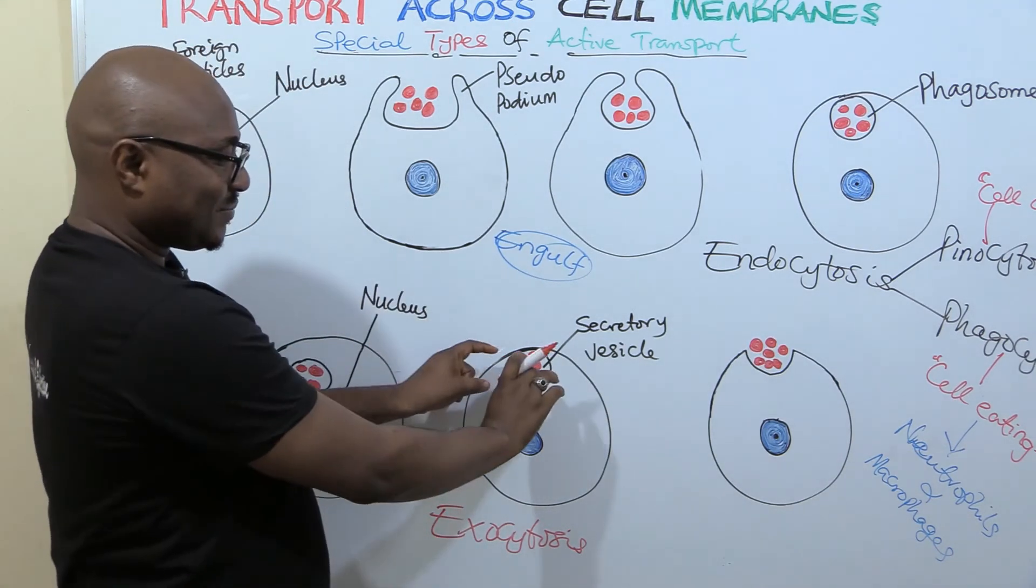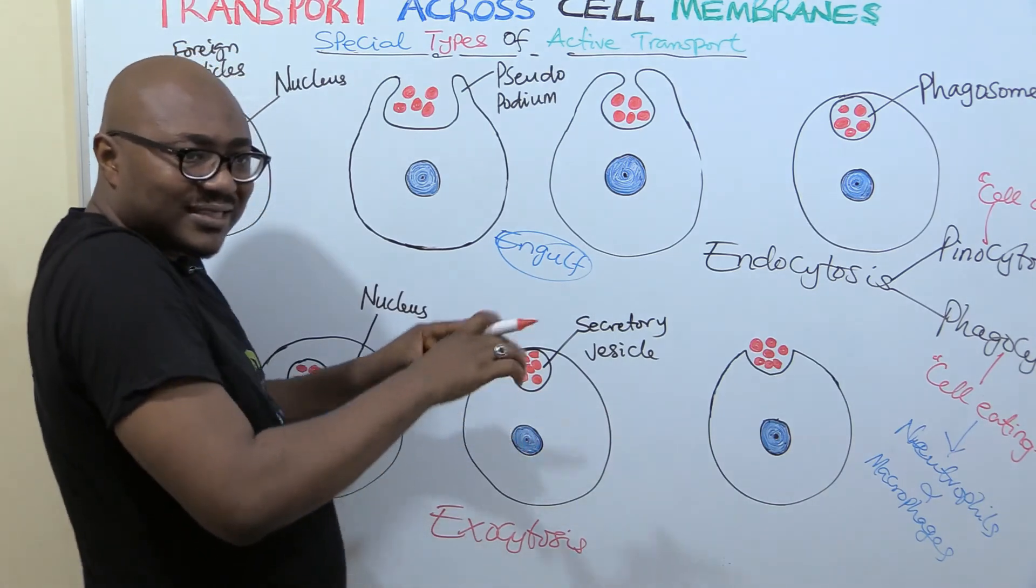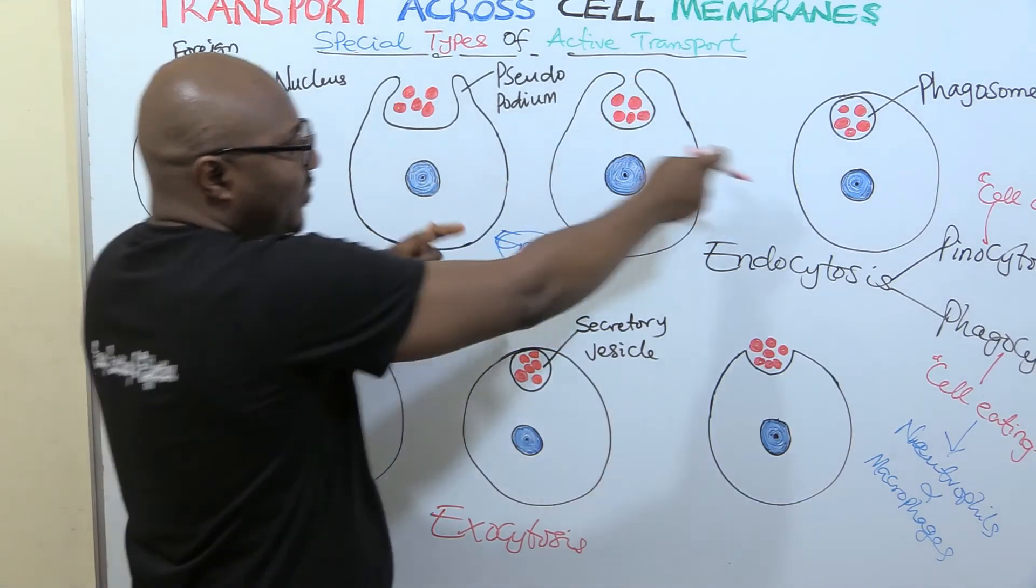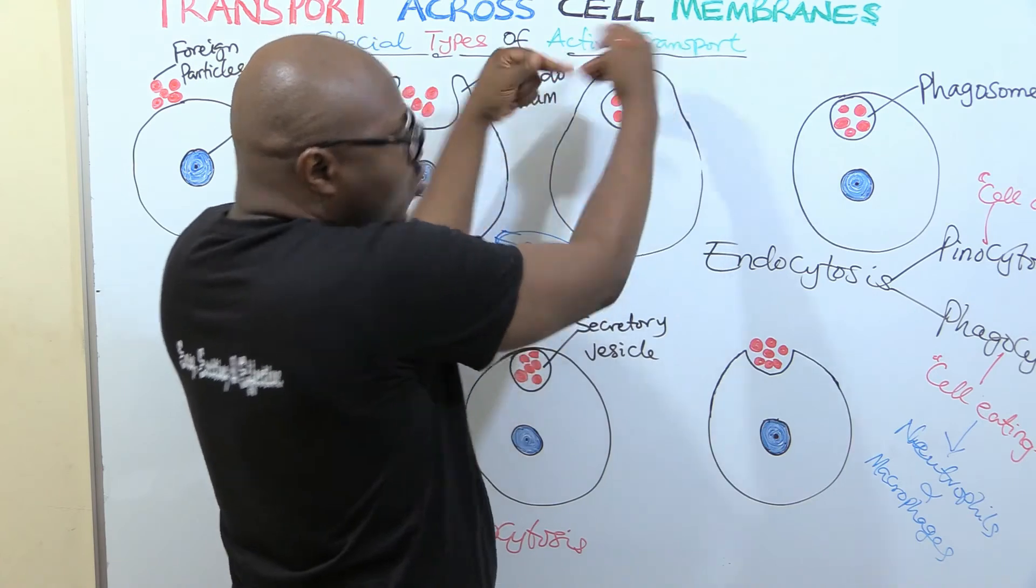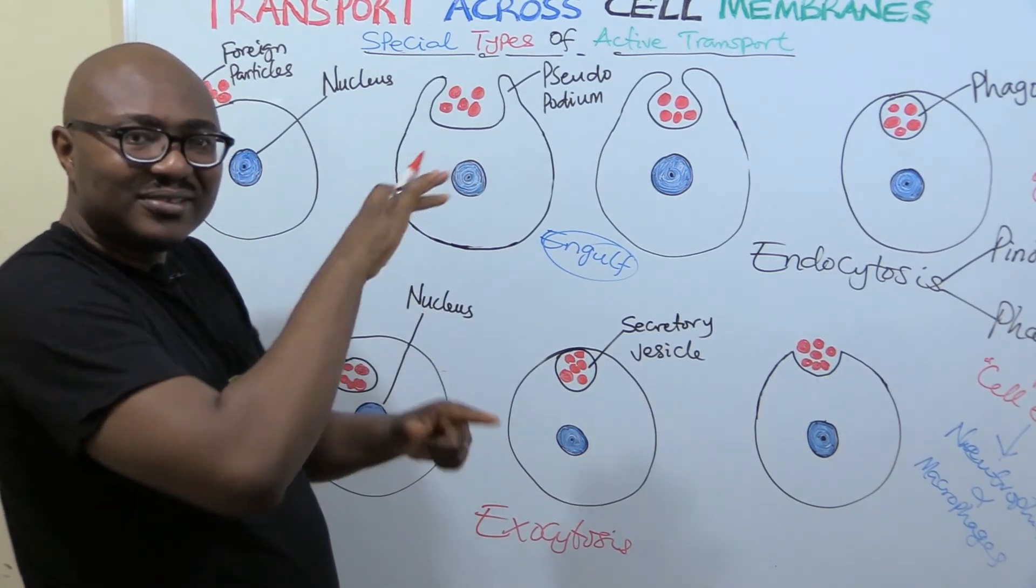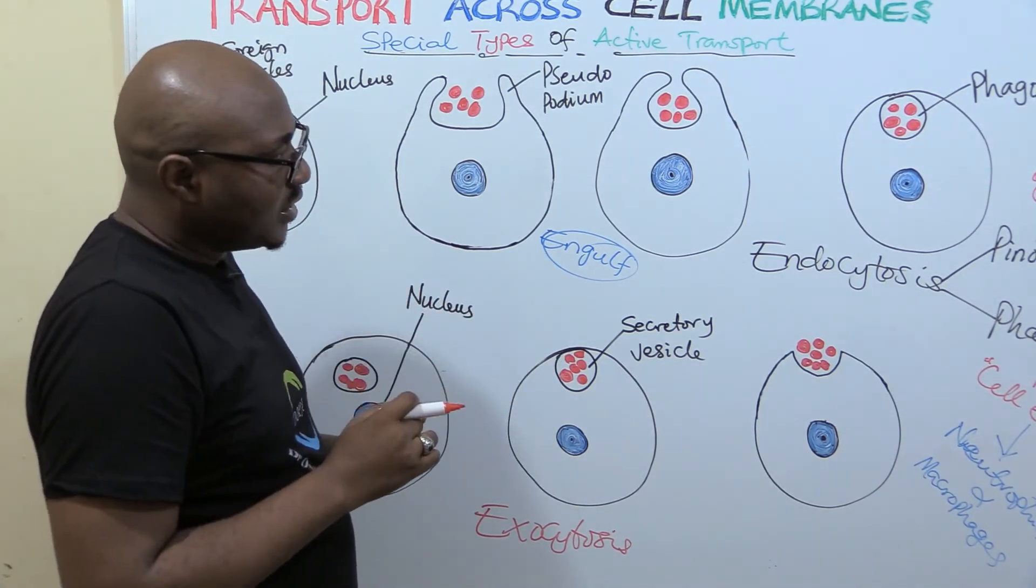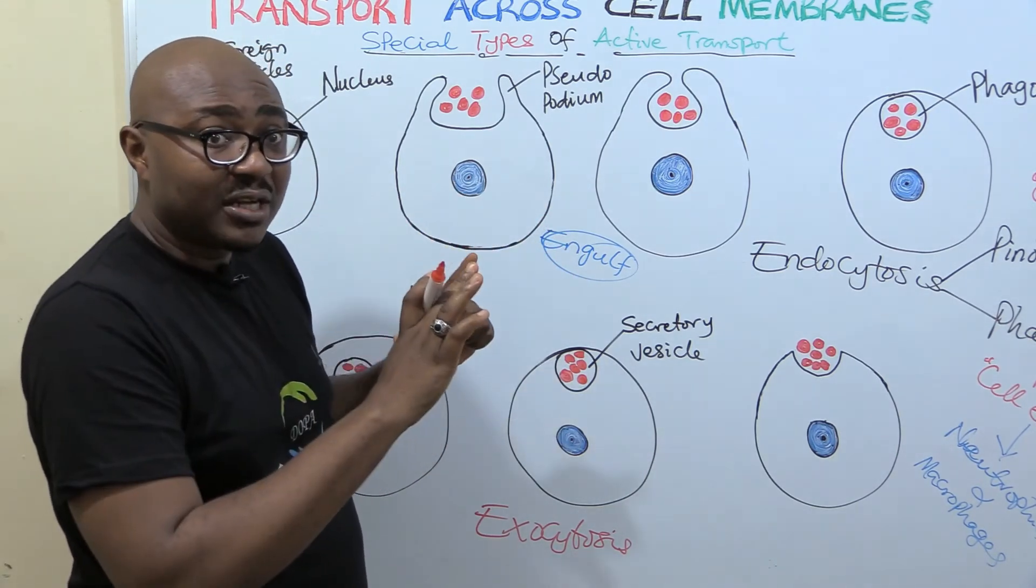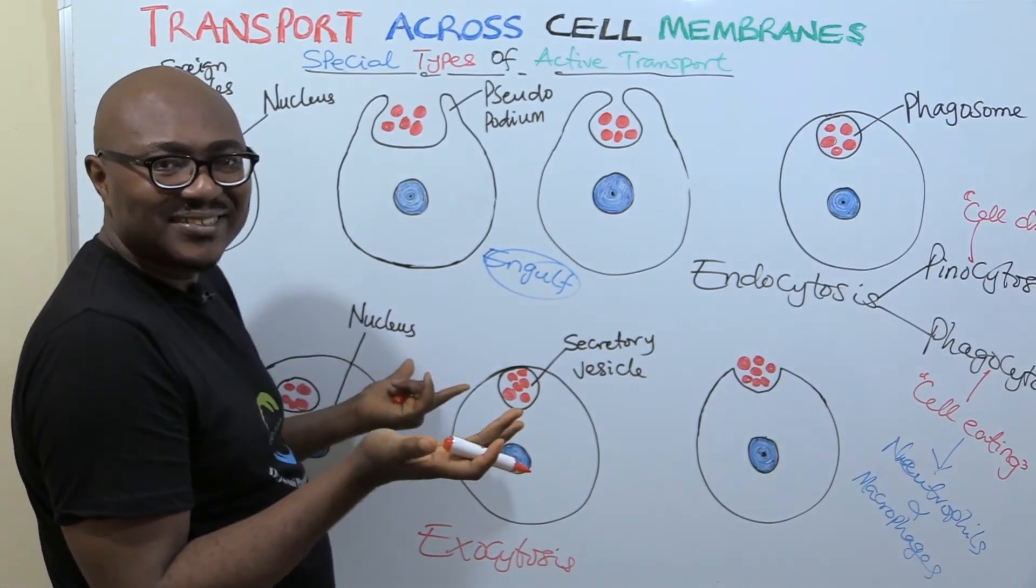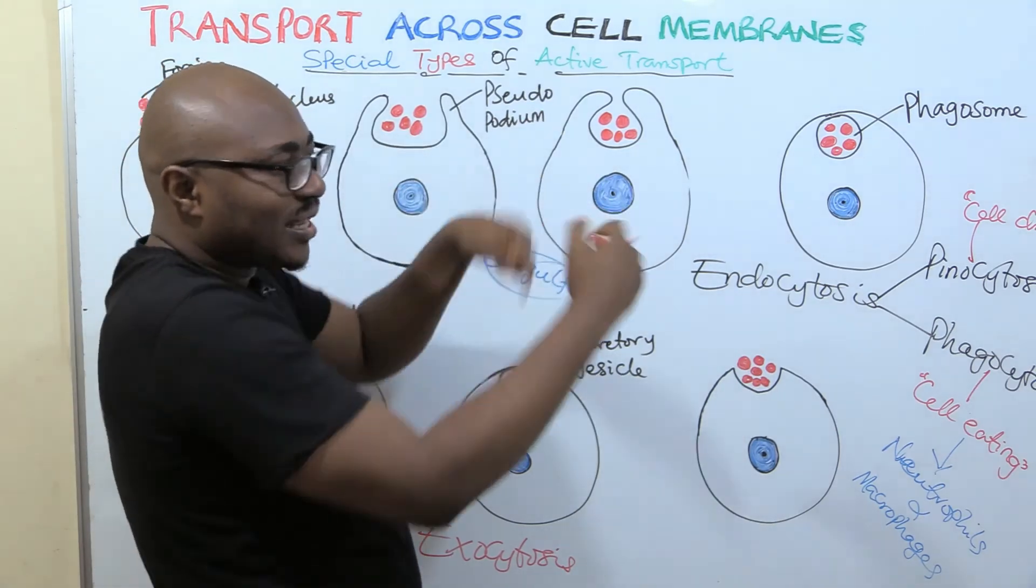So one thing you notice that exocytosis adds to the cell membrane. Do you understand? You see, it has added to the cell, so the cell becomes bigger. This one takes from the cell membrane, because this membrane now, this phagosome is covered by a membrane which it took from the cell membrane. And endocytosis shortens the whole length or diameter of the cell membrane. This one adds to it and elongates it.